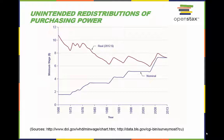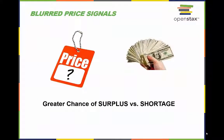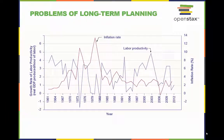All goods and services may not follow the general inflationary trend, leading to ambiguous signals in the market. This can cause a greater chance of a surplus if future prices are expected to fall, or a shortage if a rush to buy is caused by expectations of higher prices. Over the last several decades in the United States, rising inflation rates have often been closely followed by lower productivity rates, and lower inflation rates have corresponded with increasing productivity rates, as shown in the graph — though this correlation doesn't always exist.